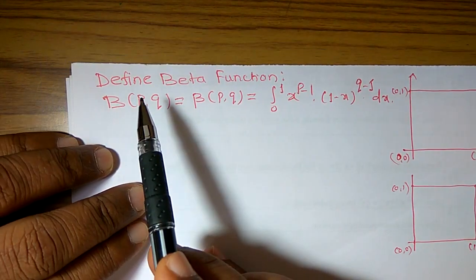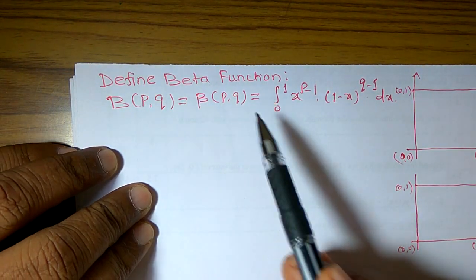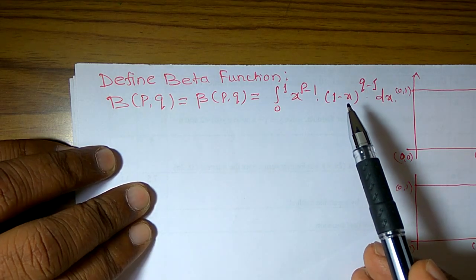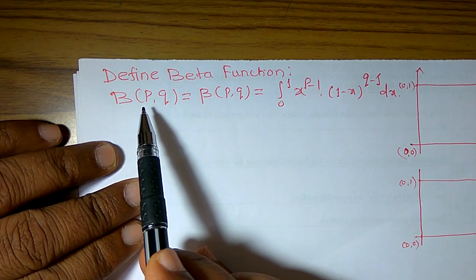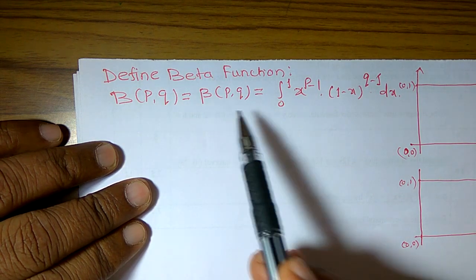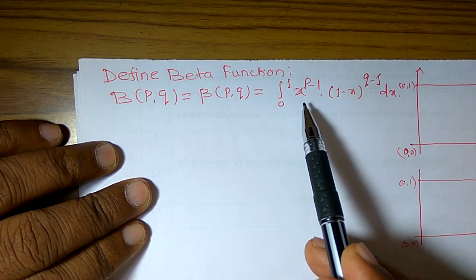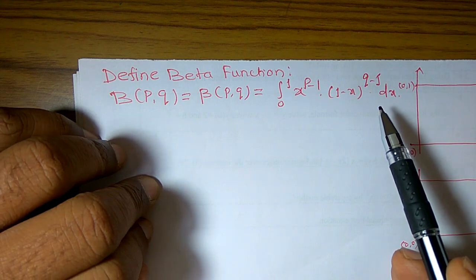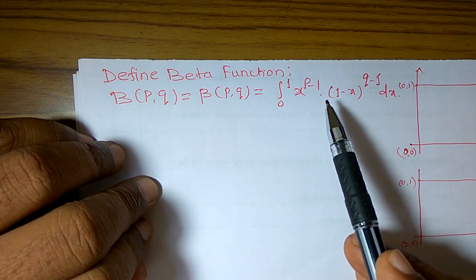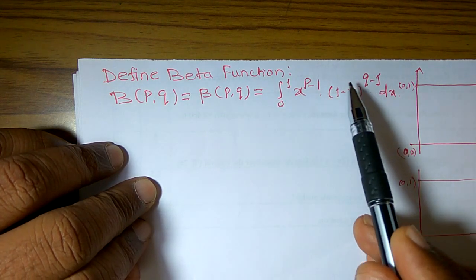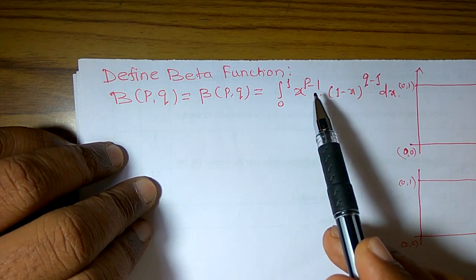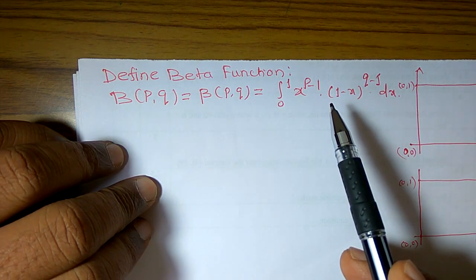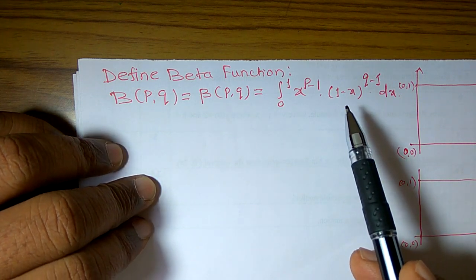In this video, I am going to define a beta function. We know that beta function plays an important role in mathematics as well as physics. Usually, beta function is denoted by b(p, q) or beta(p, q), defined as the integral from 0 to 1 of x^(p−1) times (1−x)^(q−1) dx. When the values of p and q are greater than or equal to 1, it becomes a proper integral. When the value of p or q, if any one is less than 1, then this integral becomes an improper integral but may be convergent.